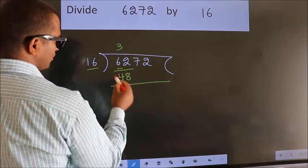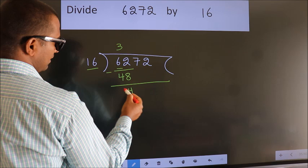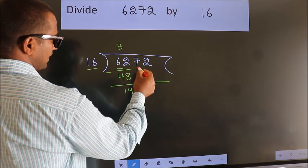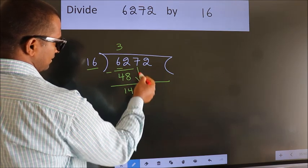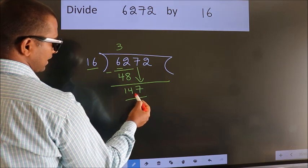Now, we should subtract. We get 14. After this, bring down the beside number. So, 7 down. So, 147.